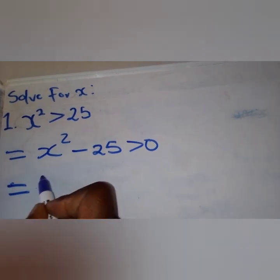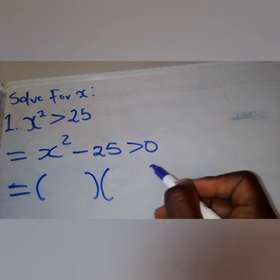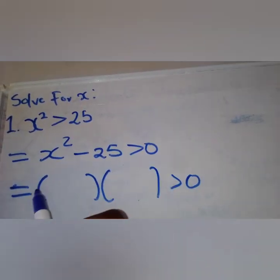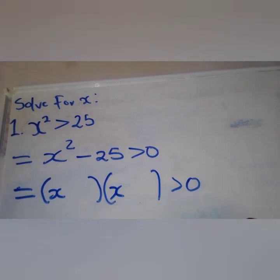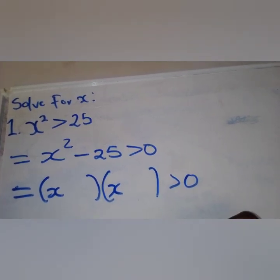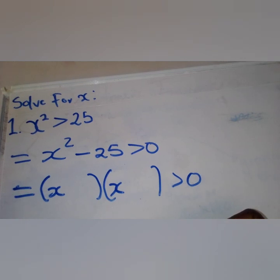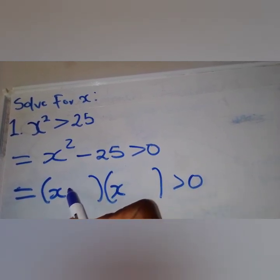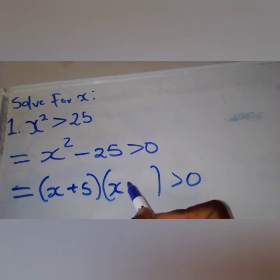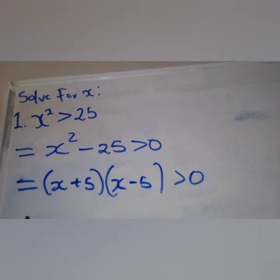Now we need to factorize. We open the bracket and do the factorization: we already have x and x in each bracket so that when multiplied they give x squared. We need two numbers that when multiplied give negative 25 and when added or subtracted give zero — those numbers are positive five and negative five.